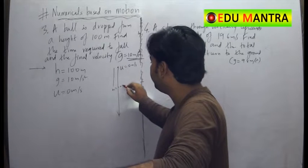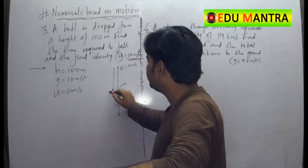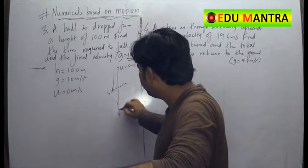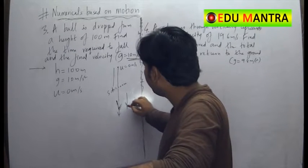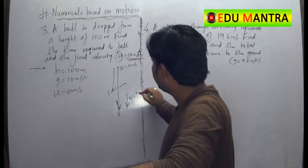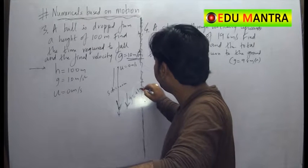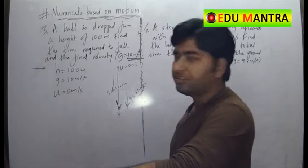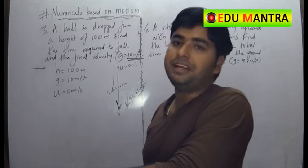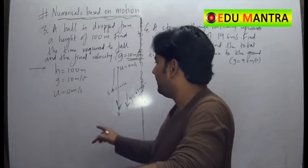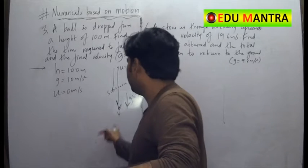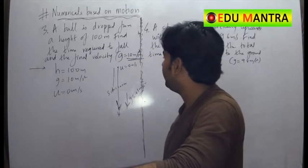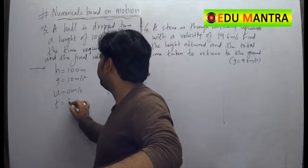The height of 100 meters becomes your displacement. The body is falling down and gravity acts in the same direction, so I will write acceleration as plus 10 meters per second squared — because the motion and acceleration are in the same direction, we take acceleration as positive. Now we can find the final velocity and the time.